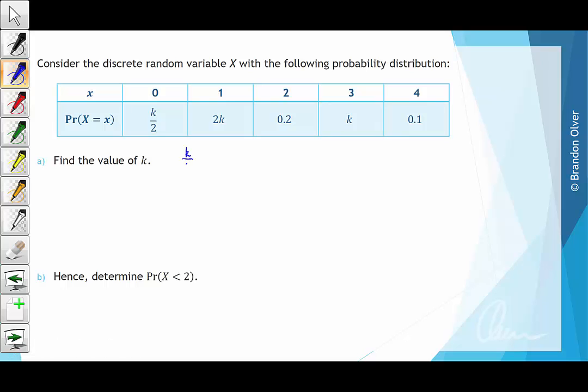So if we have k divided by 2 plus 2k plus 0.2 plus k plus 0.1, we know that that must equal 1.